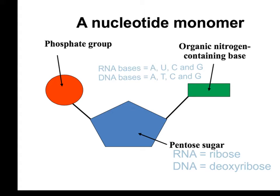Adenine and guanine are known as purines, because they have a larger two-ring structure. Whereas thymine, uracil, and cytosine are all pyrimidines — they have a smaller one-ring structure.